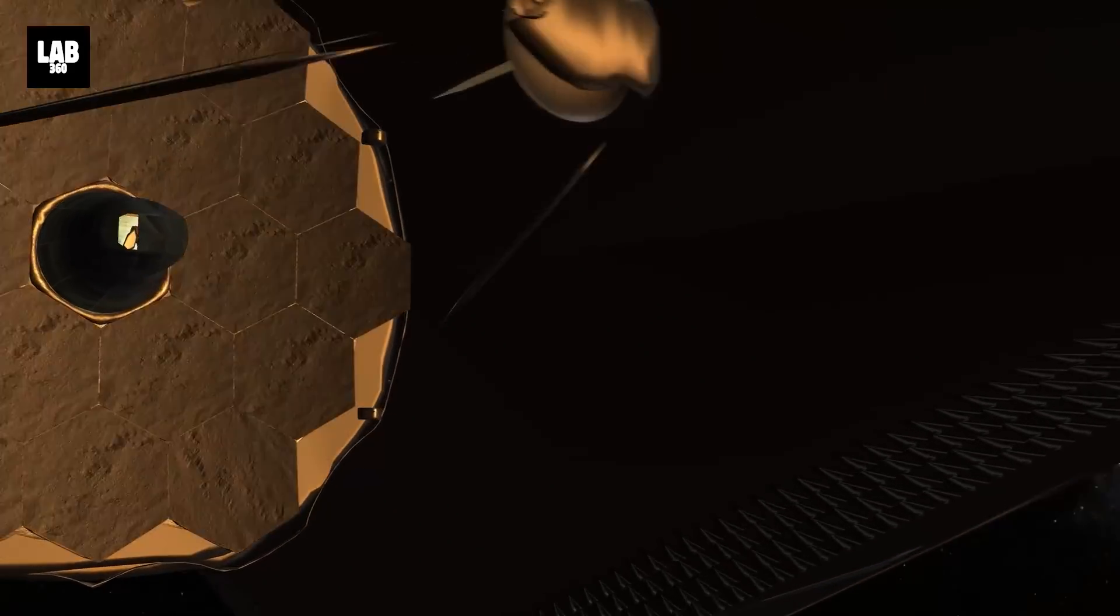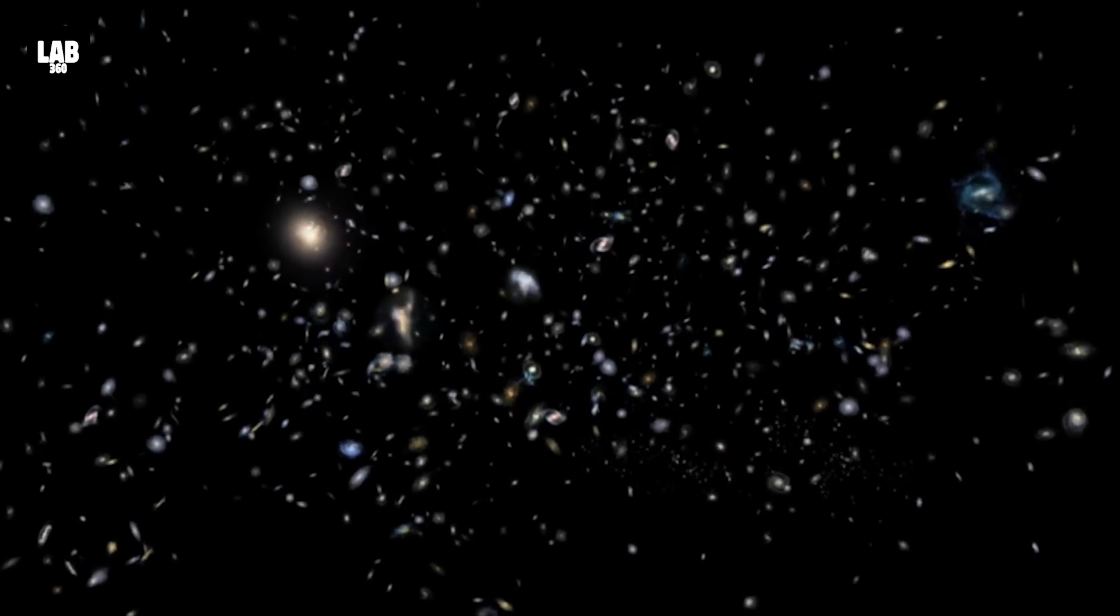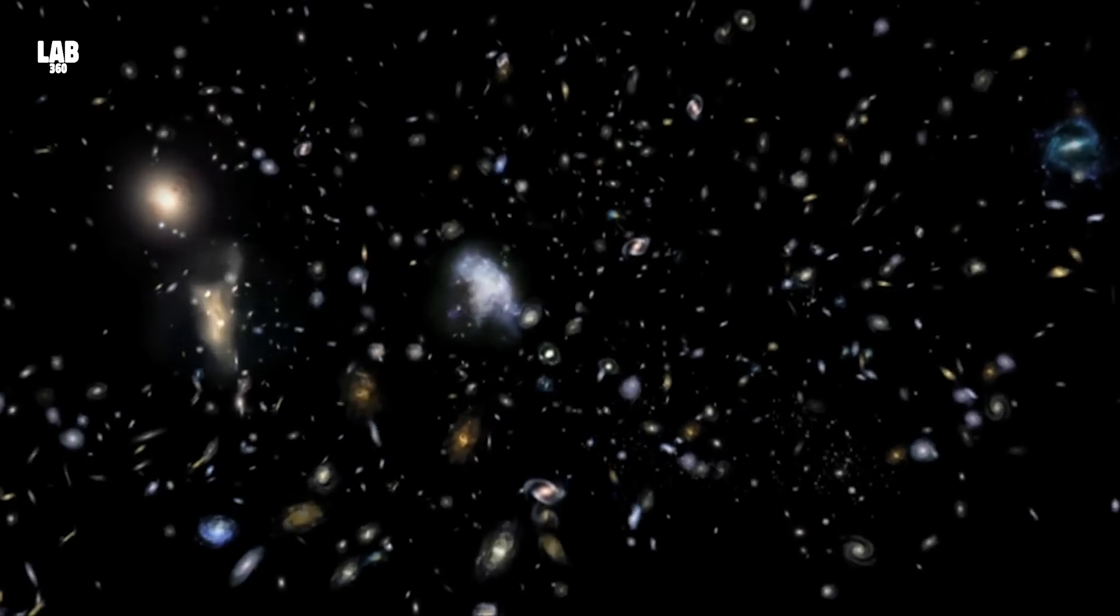But boy did Webb prove us wrong. Yes, in a surprising twist, scientists have identified more than 700 candidate galaxies near the edge of the universe.